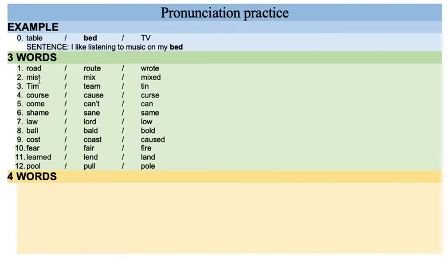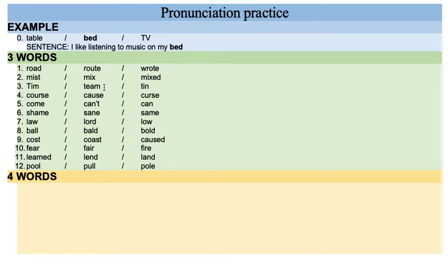Number two, you have missed, mix, mixed. The main difference is that in the present you say mix, and in the past you say mixed. Number three, you have the name Tim, team, tin. The most difficult ones are Tim and team — Tim is short, and team is long.